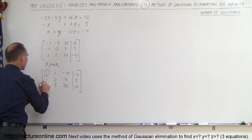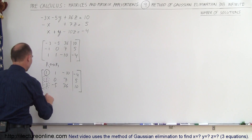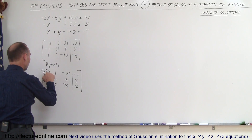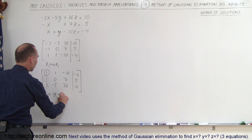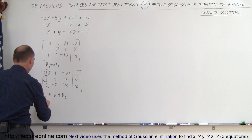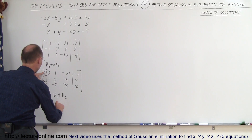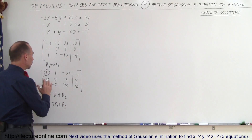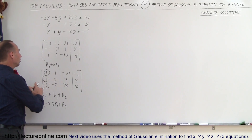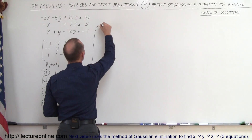Now we're going to use that 1 to get rid of the negative 1 in row 2 and to get rid of the negative 3 in row 3. We take the second row and replace it by positive 1 times R1, adding it to R2. And to get rid of the negative 3, we take R3 and replace it by positive 3 times R1, adding it to R3. When we do those two operations, these will become zeros, and we have to find out what the other numbers are. Our matrix now becomes the following.